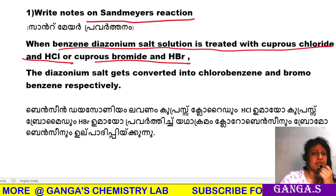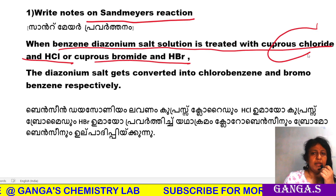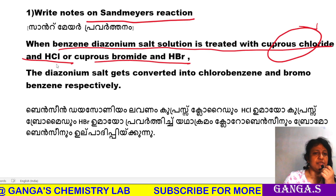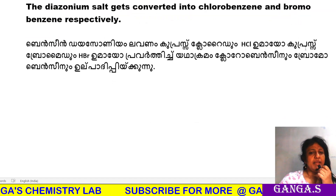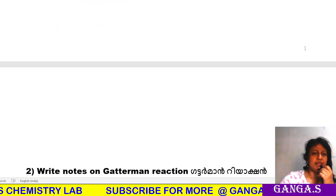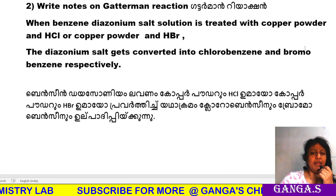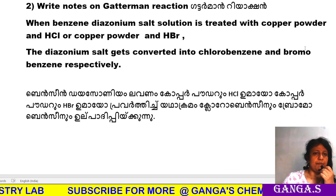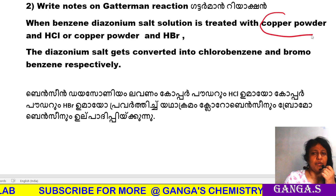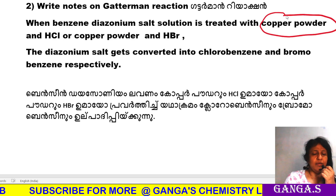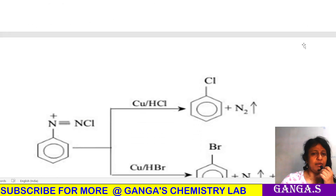Benzene diazonium chloride reacts with cuprous chloride and HCl to give chlorobenzene. The other reaction is Gatterman reaction. The factor here is copper powder — copper powder is used instead of cuprous chloride, which is very important.